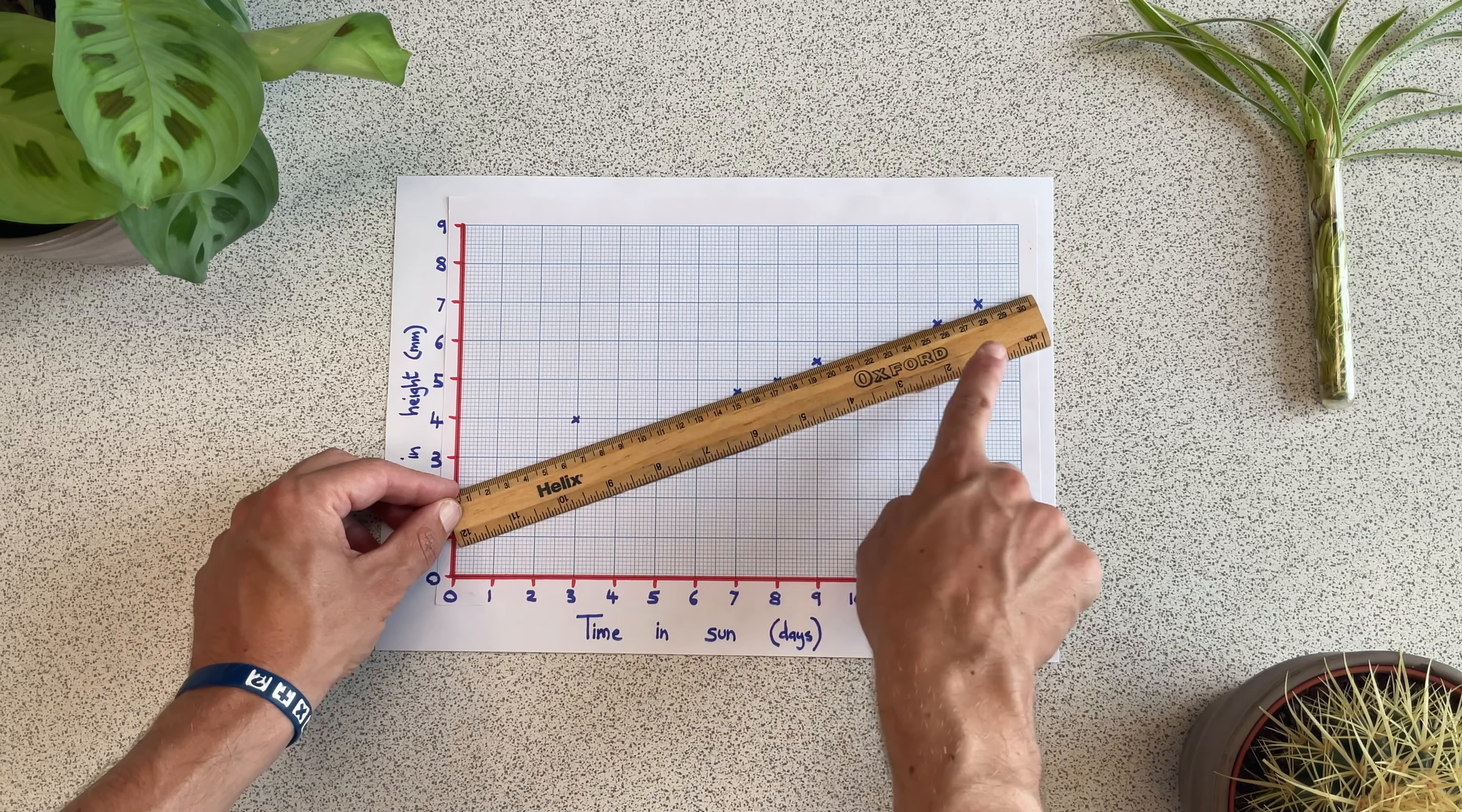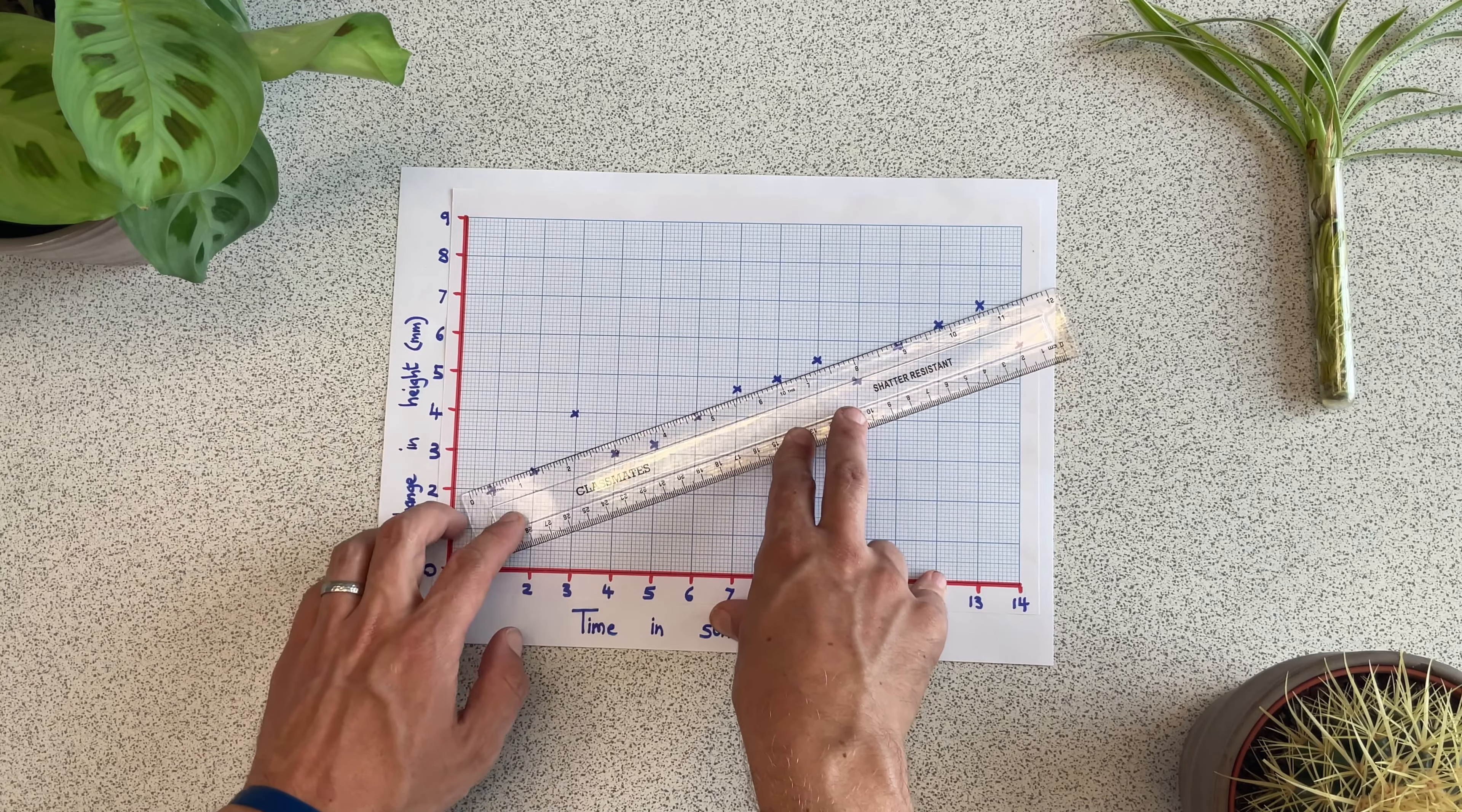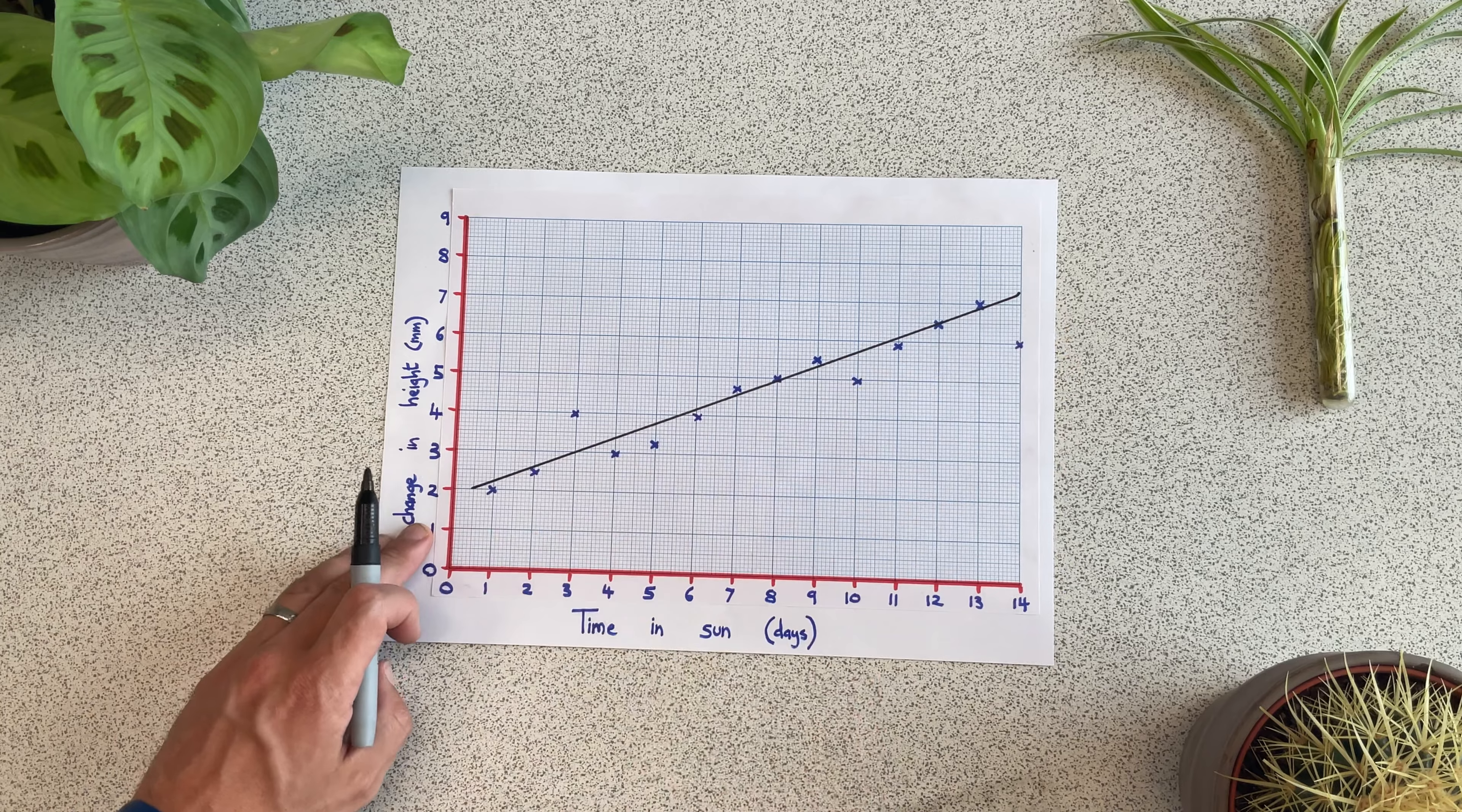You're looking to get roughly the same amount of points above and below your line. This wooden ruler looks really nice, but you can't see where the points are below the line. That's why it's best to change it for a see-through ruler. As well as checking we have roughly the same number of points above and below the line, we're also trying to get them the same distance from the line. Once you've decided where your line of best fit should go, draw the line with a nice sharp pencil.